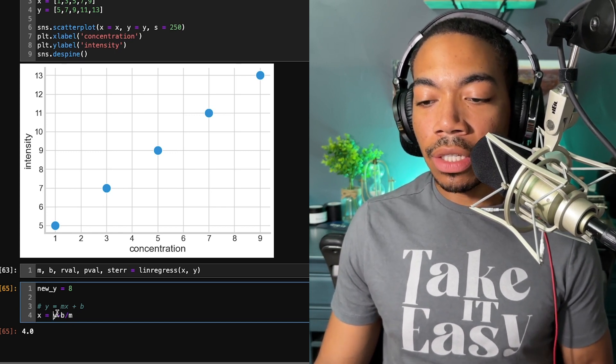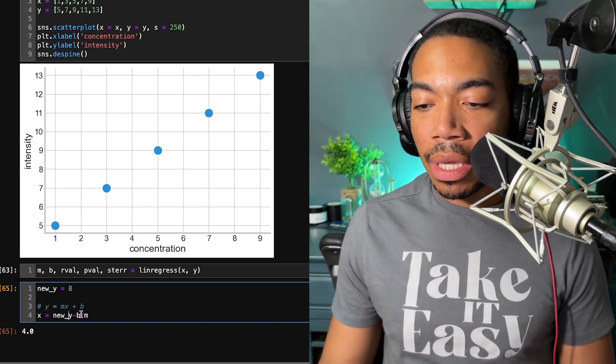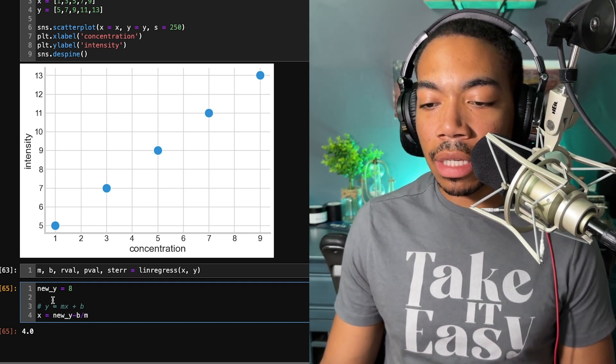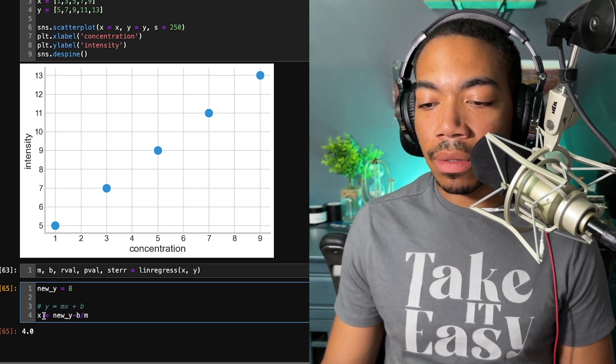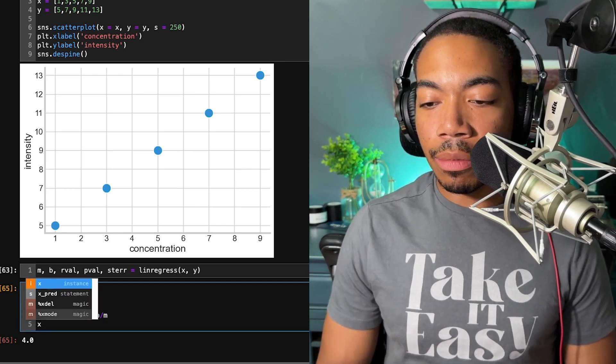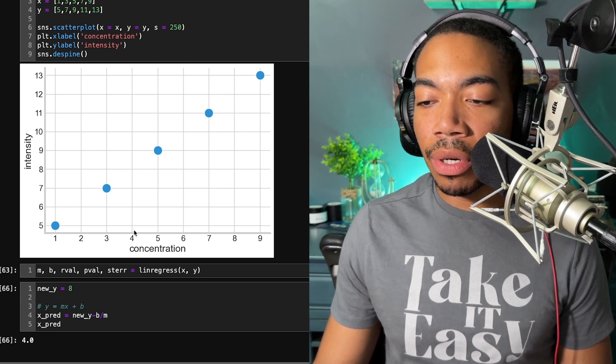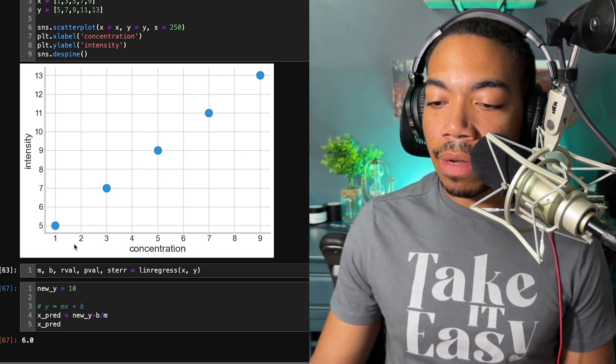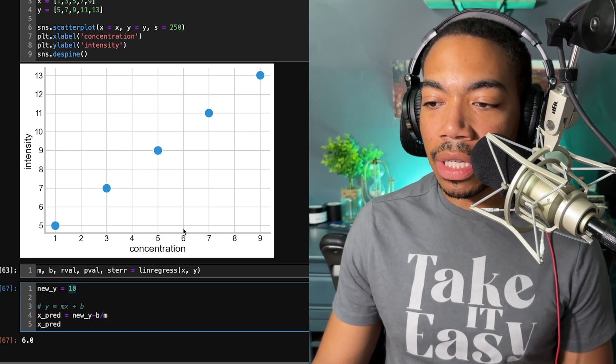And so if we actually use this, instead of y, we say new y, b and m come from our estimated parameters, and we set this equal to x predicted. And we look at x predicted. You see that x predicted when y equals 8, the predicted concentration is 4. If we look at y equals 10, our predicted concentration is 6.